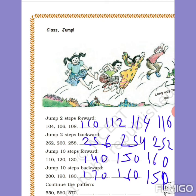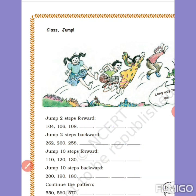Continue the same pattern: 550, 560, 570, 580, 590, 600, 610, 620, 630, 640 and so on. Then: 910, 920, 930, 940, 950, 960, 970, 980, 990, 1000. You reach 1000 in this figure.